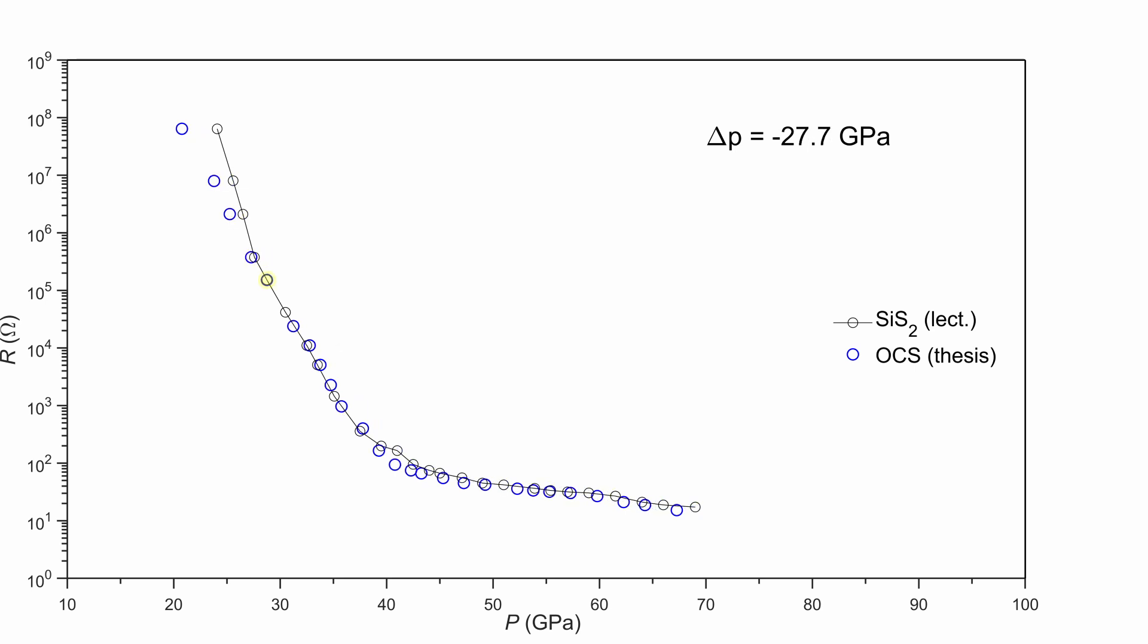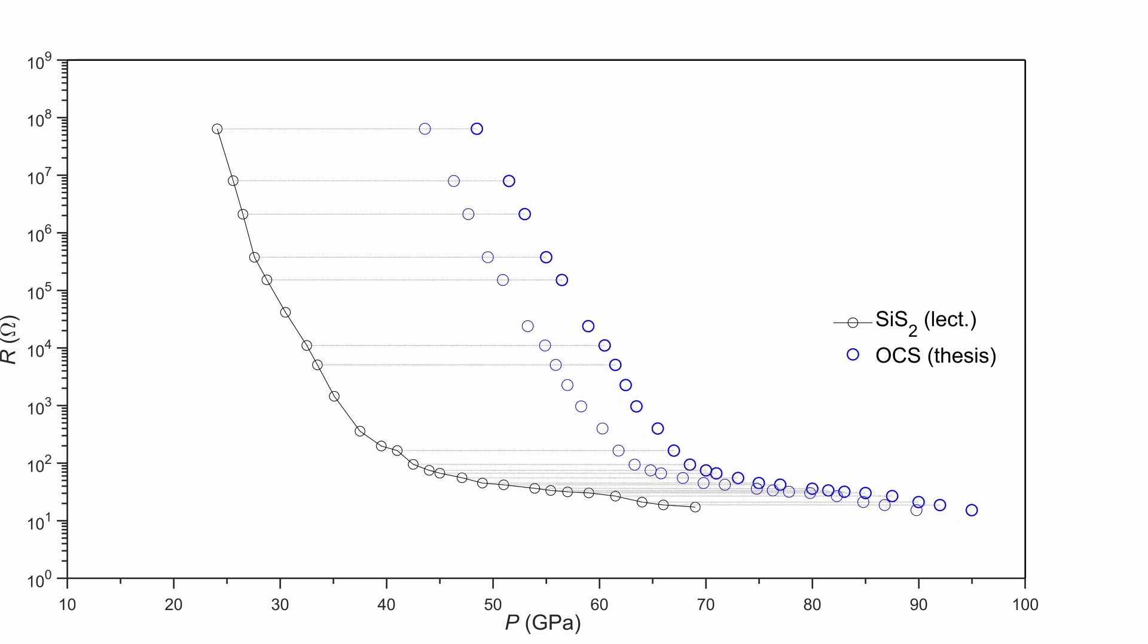Here you can see the pressure and the Raman frequency of Raman shift. And this is the resistance, showing the seven order drop in resistance right here. And these are the frequencies, changing frequencies while you're going through the pressure, clearly indicating phase transition.